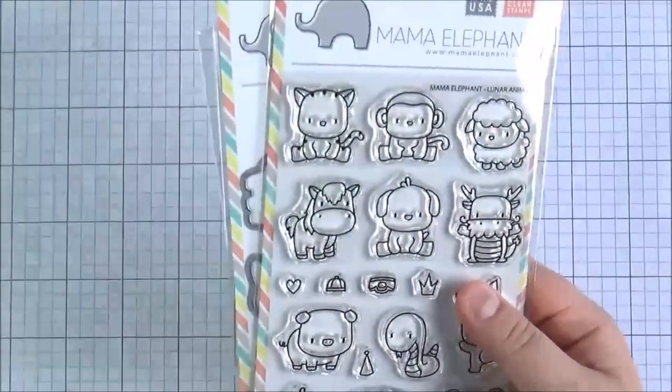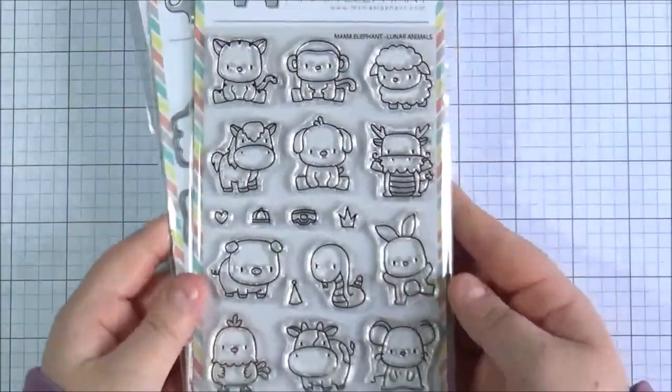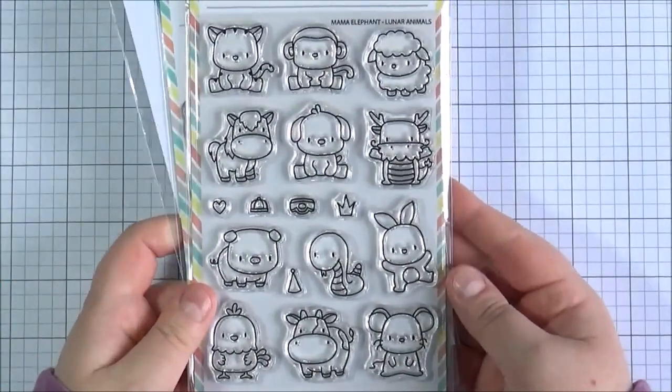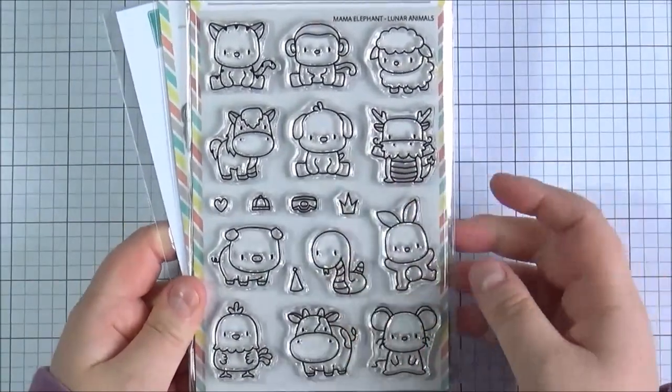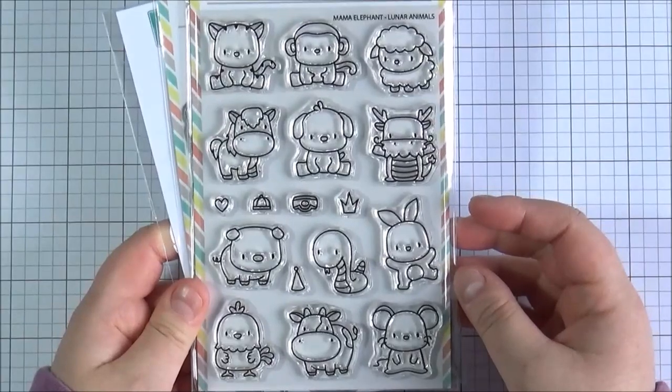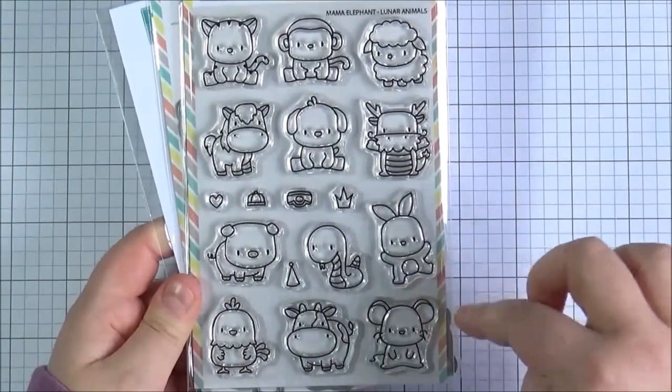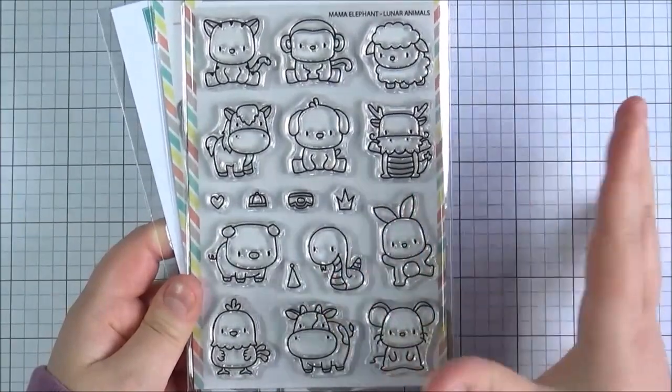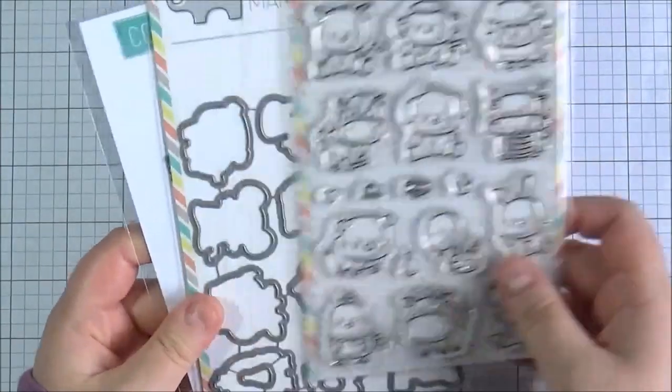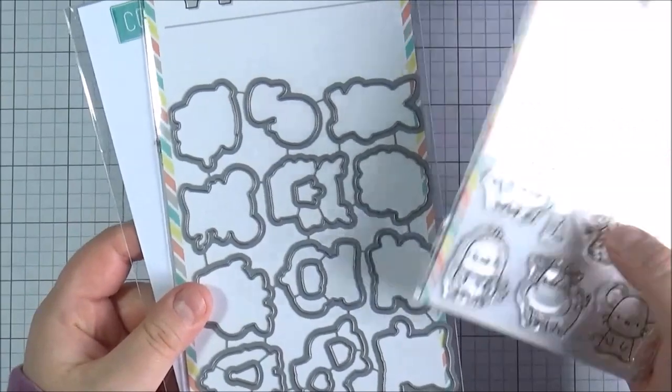And then I also got the Lunar Animals which is what I wanted the most out of anything. I was desperate to make sure that I got it whilst it was in stock. Just so cute. I love these little critters. I just think they'll be so good for loads of different occasions. You can put little birthday hats on them. You can put Christmas hats on them. Obviously you can just use them separately. Just really cute. And I did get the die set to purchase separately.